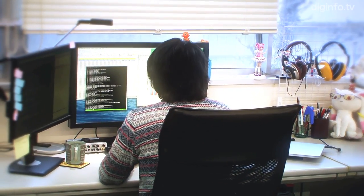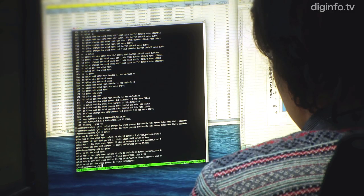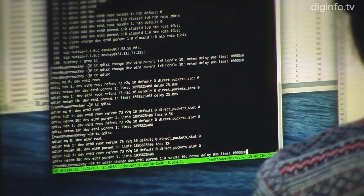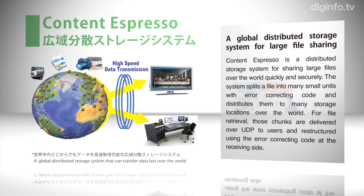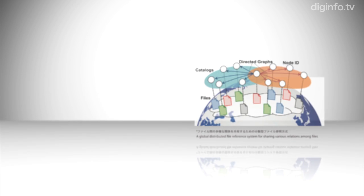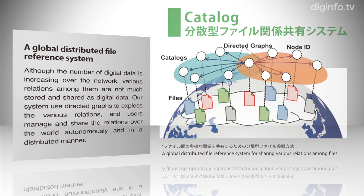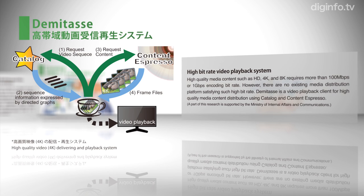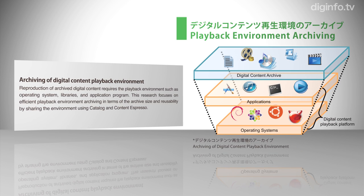Currently, the Kaneko Lab is doing R&D on ways to make it easier to handle high resolution broadband video data. The lab is developing Content Espresso, a wide area distributed storage system that distributes the storage of large files among servers worldwide, and Catalog, an autonomous distributed file relationship sharing system that manages and shares the relationships between digital data on the Internet separately from the data itself. Using those systems, the researchers aim to develop a system for receiving and playing broadband video, such as 4K, and ways to efficiently utilize playing environment archives for digital content.